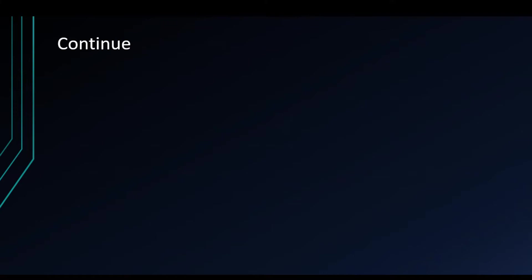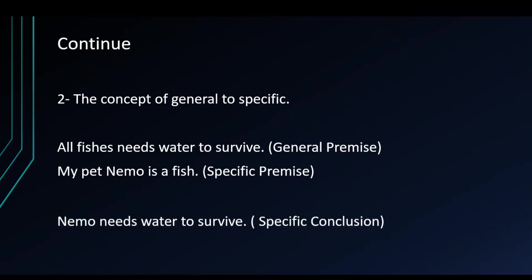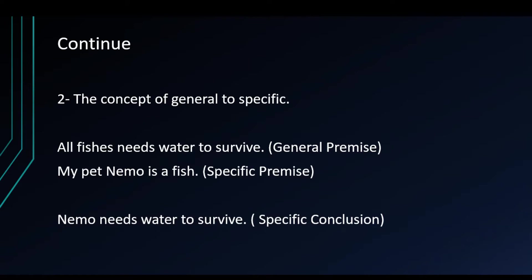The second characteristic has to do with the concept of general to specific. Let's analyze these three premises by pointing out if they are from general to specific. 'All fish need water to survive' is a general premise. 'My pet Nemo is a fish' is a specific premise. 'Nemo needs water to survive' is a specific conclusion. So the approach in deductive reasoning is a top-down approach, because we move from general to specific.